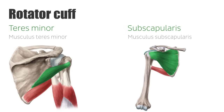In addition, the muscles tighten the joint capsule to prevent a pinch during shoulder movements. The rotator cuff, as the name suggests, plays a major role in the internal and external rotation of the upper arm in the shoulder joint.